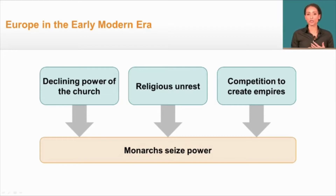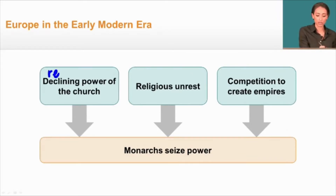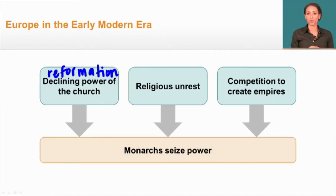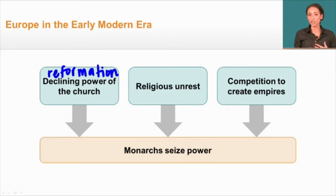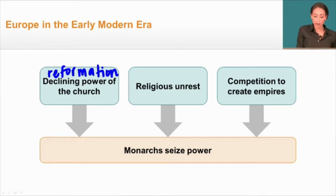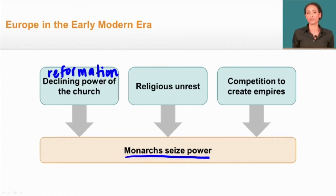A few things happened to create tremendous change in Europe in the 15 and 1600s. One, we see something called the Reformation, which leads to a decline in the power of the church, and religious unrest creates uncertainty amongst the people. Finally, competition amongst European nations to create empires in the Americas through trade routes — all combined to see monarchs seizing power.